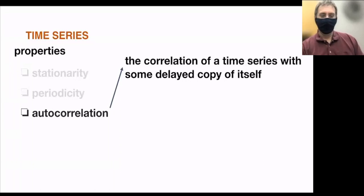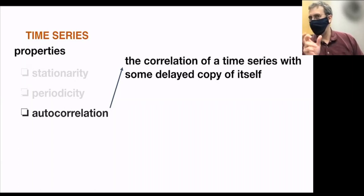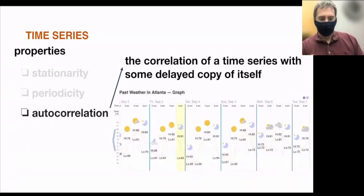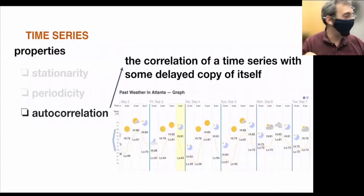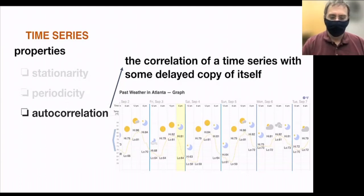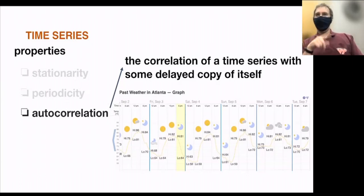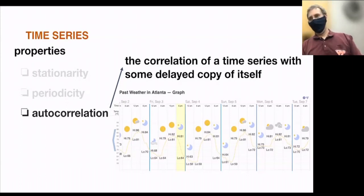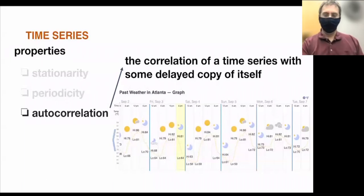Auto-correlation is the correlation of a time series with some delayed copy of itself. If it shows repeated patterns, it'll be highly auto-correlated. Looking at the weather in Atlanta — there's a yellow curve showing temperature throughout the day, with highs in the 80s. The temperature day by day is very correlated; the high today is a good indication of what the high tomorrow will be, changing very slowly on a day-to-day scale.